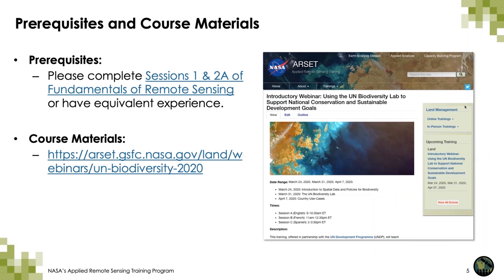To receive a certificate of completion, you must attend all three live webinars and complete the homework. It takes some time to process these certificates, so you can expect to receive them about two months after the completion of the course. The only prerequisite is the fundamentals of remote sensing or the equivalent experience. You can find all the course materials on the website, including a PDF of the PowerPoint presentation in all three languages and a link to view the recording from each week's webinar on our YouTube channel.